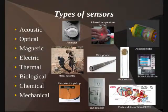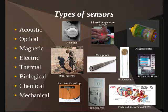Now I'll talk about some different types of sensors and the different attributes they can detect. There are several categories, including acoustic, optical, magnetic, electric, thermal, biological, chemical, and mechanical properties, although there are more.